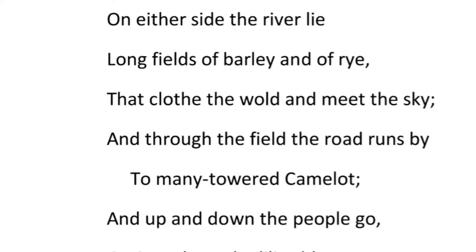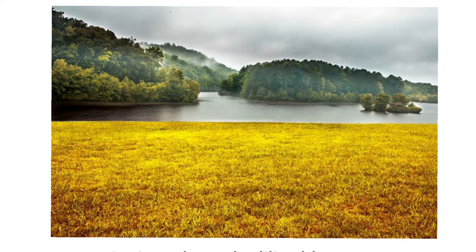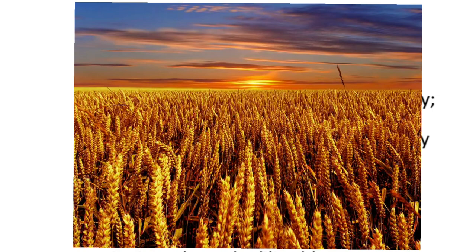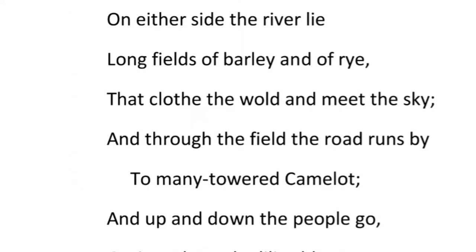The poem opens with a vivid description of a landscape. The poet Tennyson mentions a river that runs through a field of grains — barley and rye. He says the barley and rye clot or cover the world. Here 'world' is an old word for an open, unforested piece of land.